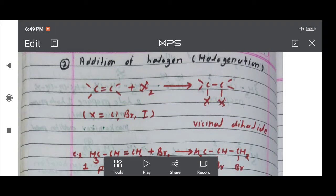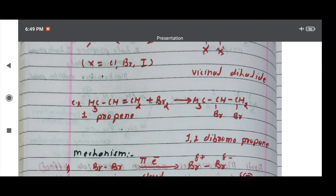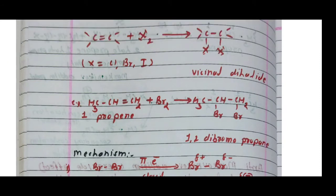For example, ethene (CH₂=CH₂) plus Br₂ gives 1,2-dibromoethane. Taking another example: propene, a three-carbon compound with a double bond between carbon one and two — one-propene reacts with bromine.